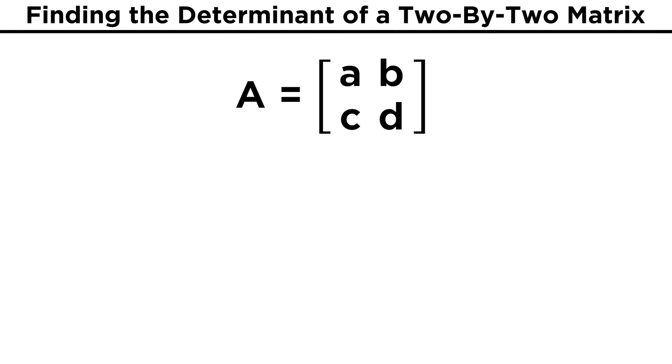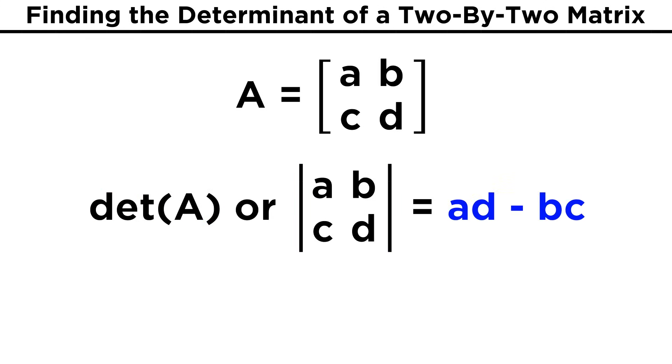Starting with the simplest square matrix, a two by two matrix, with entries A, B, C, and D, the determinant represented by these vertical lines on either side of the entries will be a scalar with the value of AD minus BC. In other words, we find the product of the upper left and lower right entries, and subtract from that the product of the upper right and lower left entries.